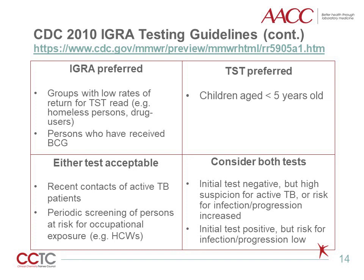Finally, there are situations in which both tests may be considered — such as when the initially ordered test (IGRA or TST) is negative but there is high suspicion for active TB, or the risk for infection and/or progression is increased. Ordering both tests could also be considered when the initial test is positive but the risk for infection and/or progression is thought to be low.